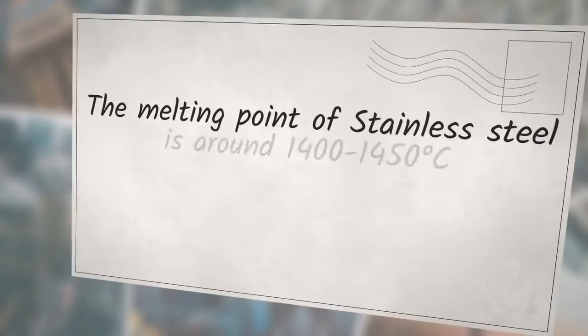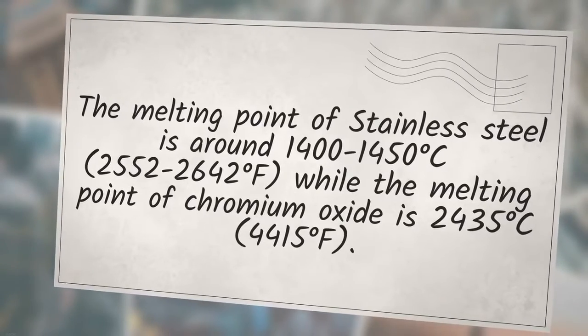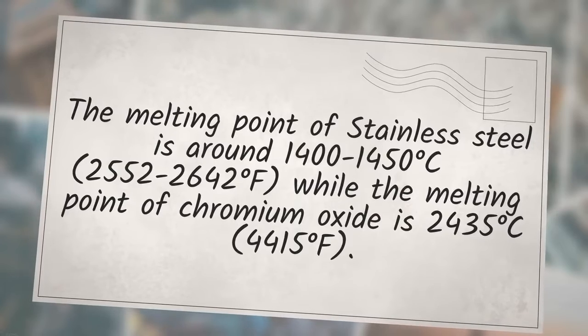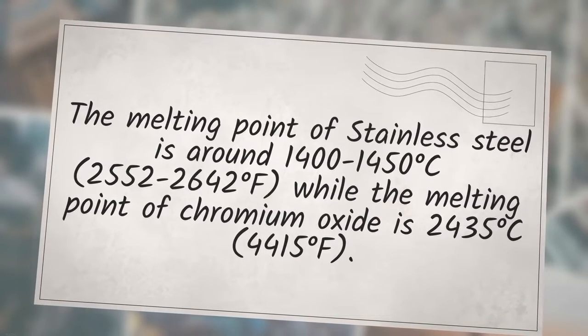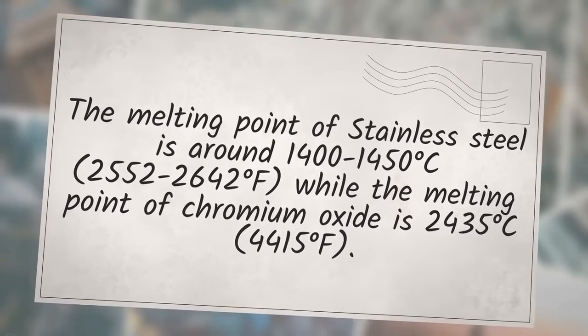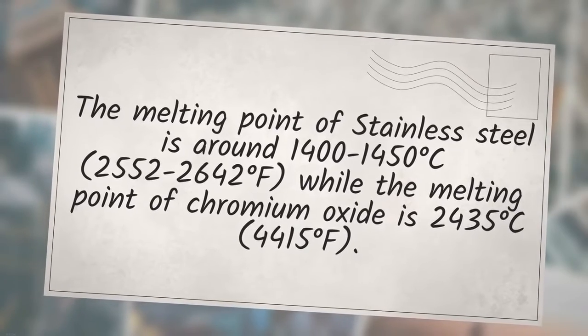The melting point of stainless steel is around 1400 to 1450 degrees Celsius, 2552 to 2642 degrees Fahrenheit, while the melting point of chromium oxide is 2435 degrees Celsius, 4415 degrees Fahrenheit.